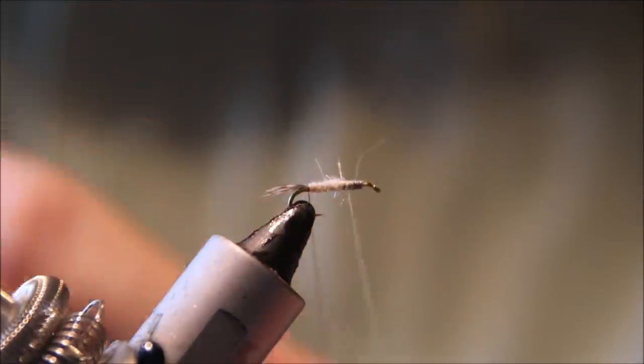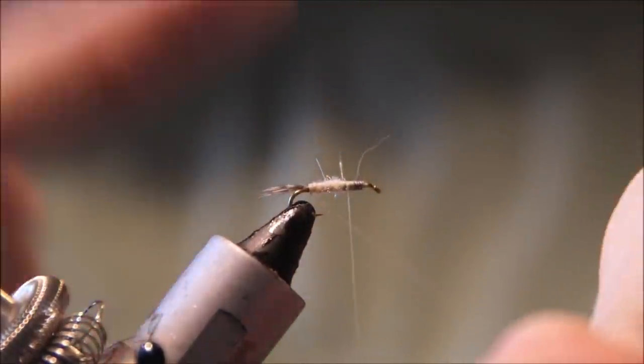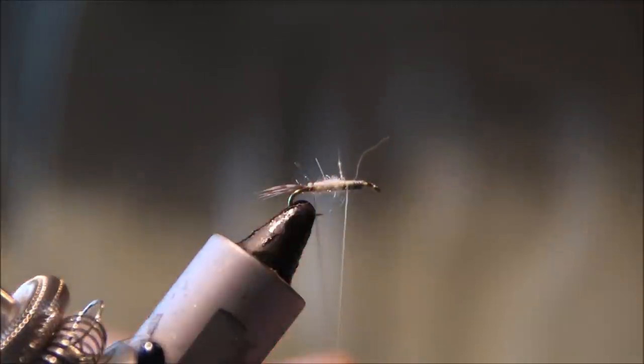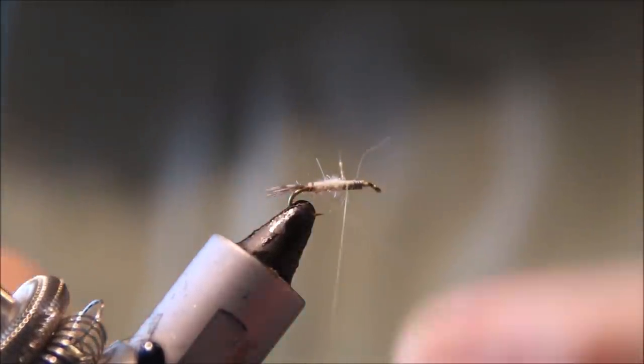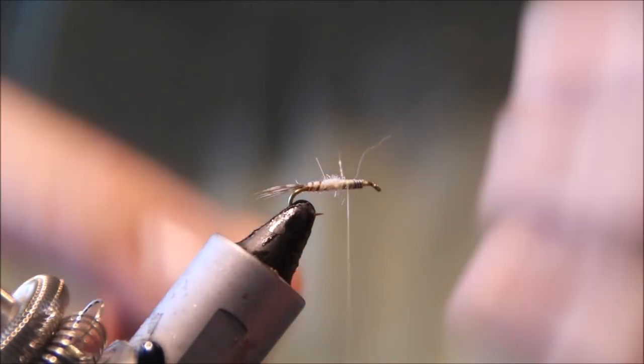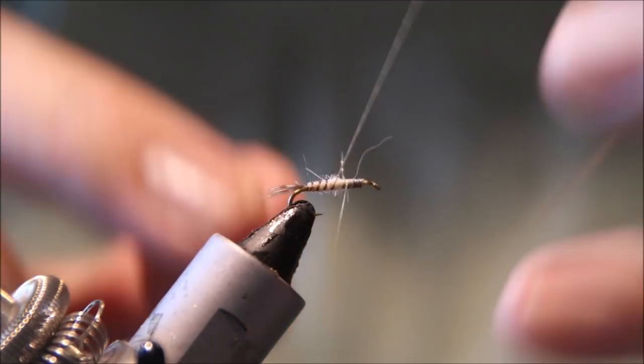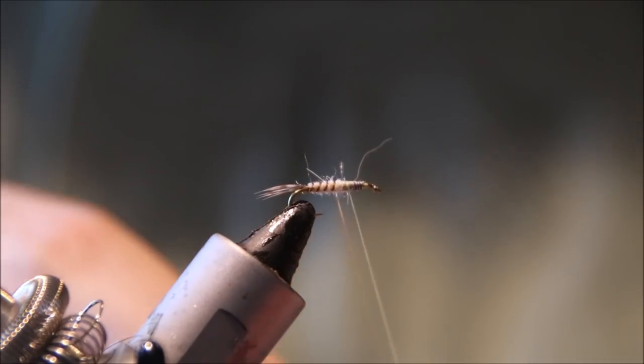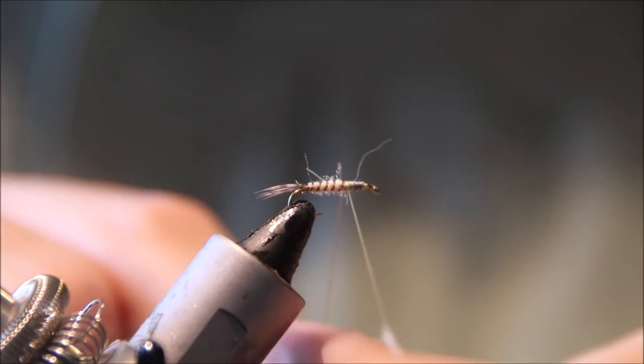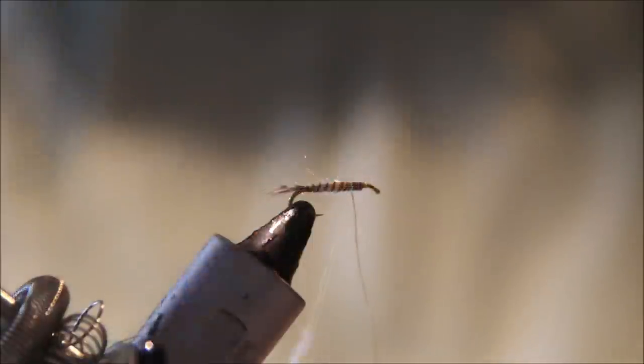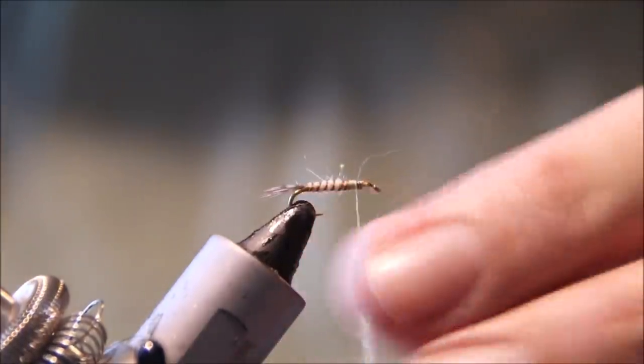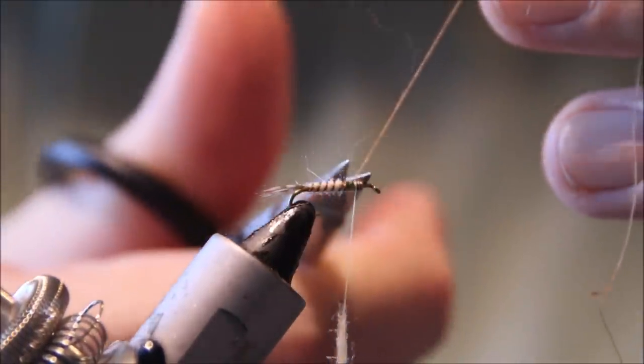Now I'll counter-rib with the brown thread so you can see it clearly. A full turn at the back around the tail, then four or five open turns forward. Trim away the waste.